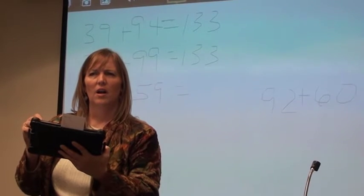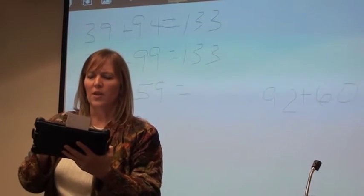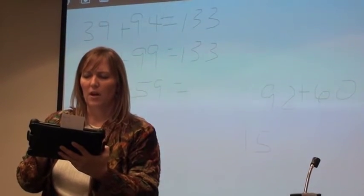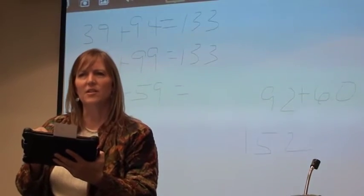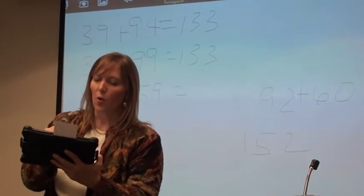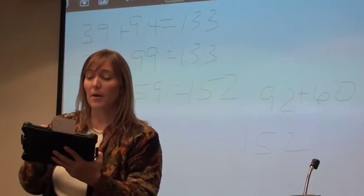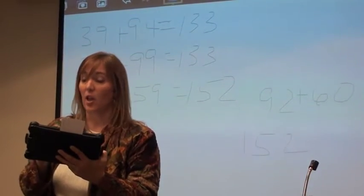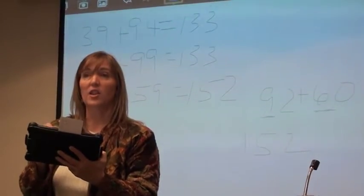Volunteer? Yes, ma'am. 92 plus 60. So you sort of did that give and take thing again. If you give one to the 59, that becomes a 60. If you take it from the 93, that becomes a 92. How did you add 92 and 60? I'm curious. So you know that 90 plus 60 is 150, and you still have that 2 hanging around. Excellent. Did you hear how I just superimposed just a little bit of meaning on that? Perfect. So 152. I love, by the way, how you started with the big numbers. I love how you started with the 90 and the 60.